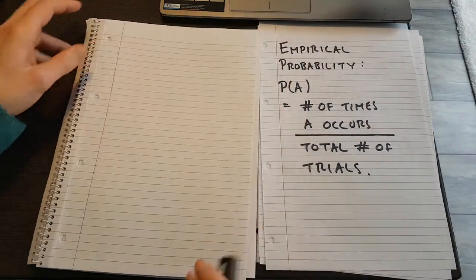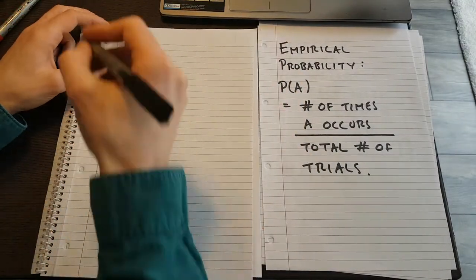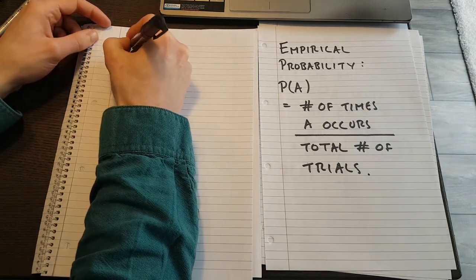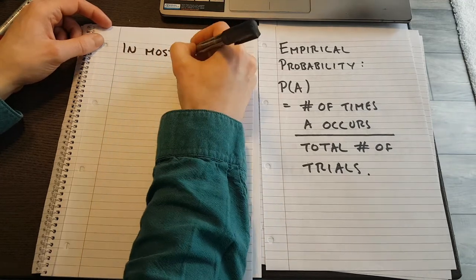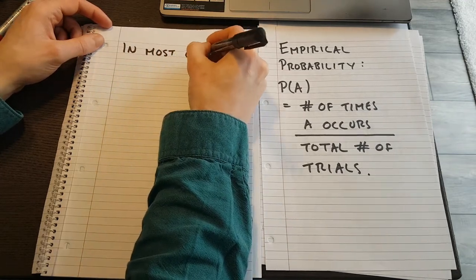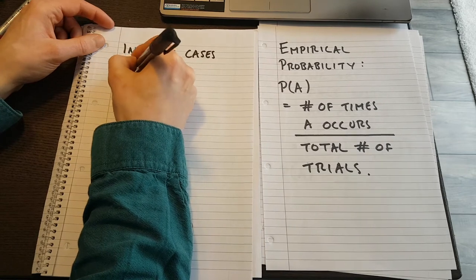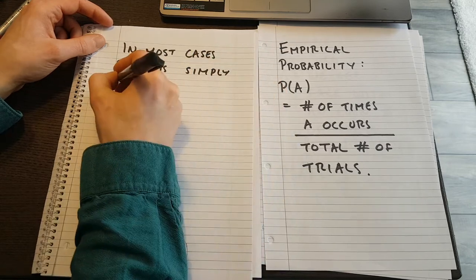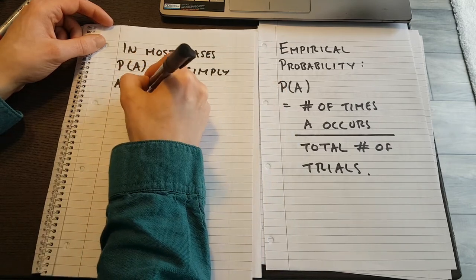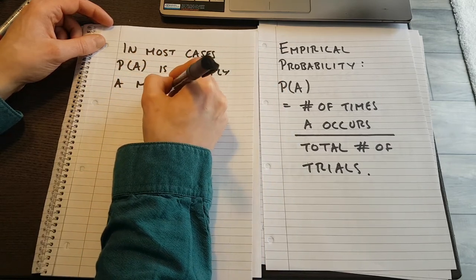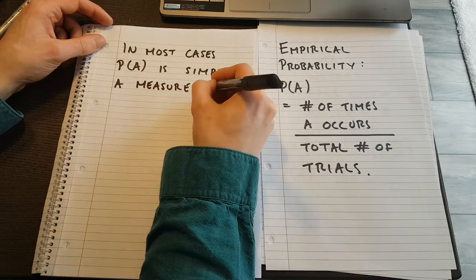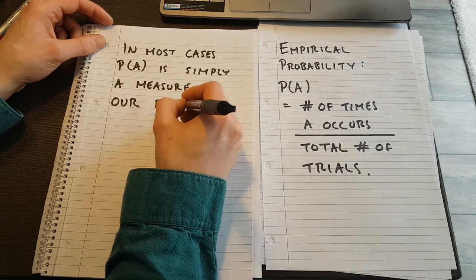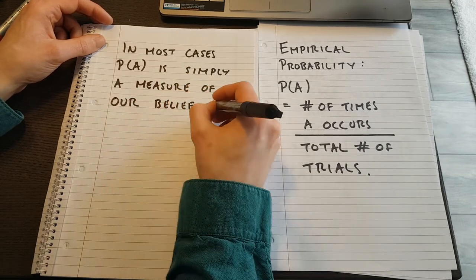So, neither of those really are the ideal definition. The real definition, like I said, is that the probability of A, in most instances, the probability of A is simply a measure of our belief that A will occur.